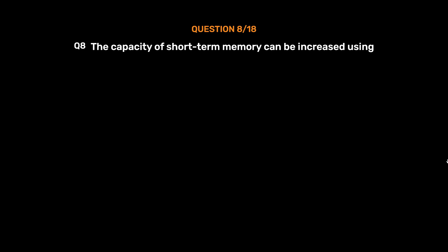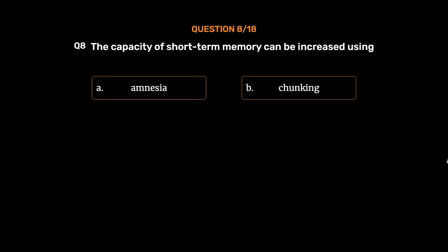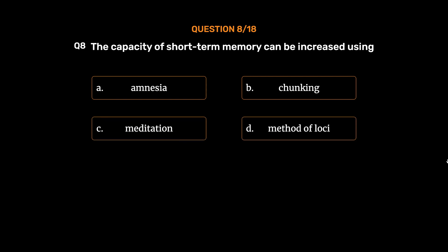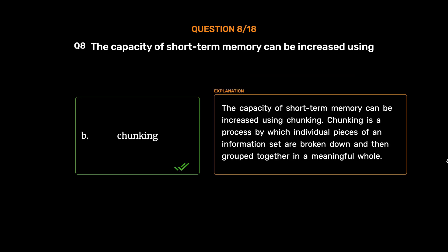Question number 8. The capacity of short-term memory can be increased using: Option A: Amnesia. Option B: Chunking. Option C: Meditation. Option D: Method of Loci. The correct answer is Option B, Chunking. Chunking is a process by which individual pieces of an information set are broken down and then grouped together in a meaningful whole.